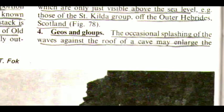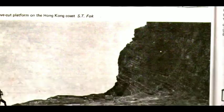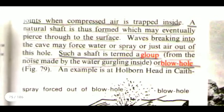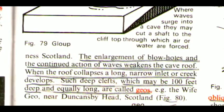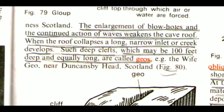The fourth one is Gloups and Geos. The occasional splashing of the waves against the roof of a cave may enlarge the joints when compressed air is trapped inside. A natural shaft is thus formed, which may eventually pierce through to the surface. Waves breaking into the cave may force water, spray or just air out of this hole. Such a shaft is termed a gloup, from the noise made by the water gurgling inside — a blowhole. An example is at Holborn Head in Caithness, Scotland.